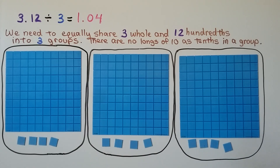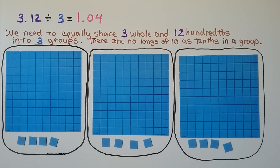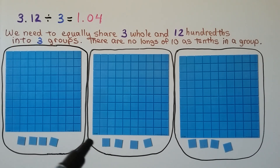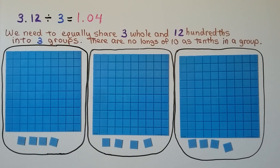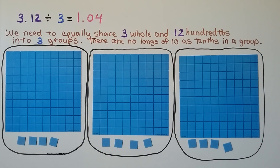Here we have three and twelve hundredths divided by three. Because we have three wholes being divided by three, we can put one whole into each of the three groups. We look at the twelve hundredths as twelve individual hundredths — not as one tenth and two hundredths. If we have twelve single hundredths, we can put four in each group. There are no longs of ten, so we only have one whole and four hundredths in each group. Our quotient is one and four hundredths.